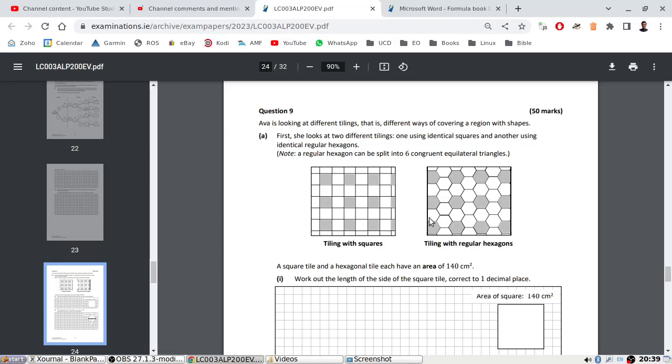Alright, Abe is looking at different tilings, that is different ways of covering a region with shapes. First she looks at two different tilings, one using identical squares and the other using identical regular hexagons. Work out the length side of a square tile correct to one decimal place.